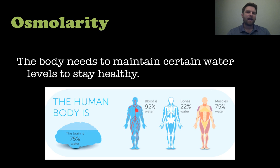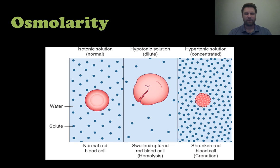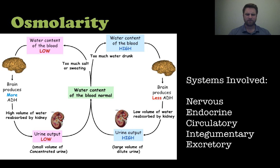The last topic is osmolarity — how much solute there is within the water-containing systems of the body. We need to maintain a certain water level to stay healthy. The human body is about 75% water in the brain, 92% of blood is water, and even 22% of bones is water. To keep that healthy balance, recall the different types of solutions: in the blood, isotonic is best, where solute concentration inside and outside the cell is equal. Hypotonic solutions cause blood cells to rupture, and hypertonic solutions cause them to shrivel up.